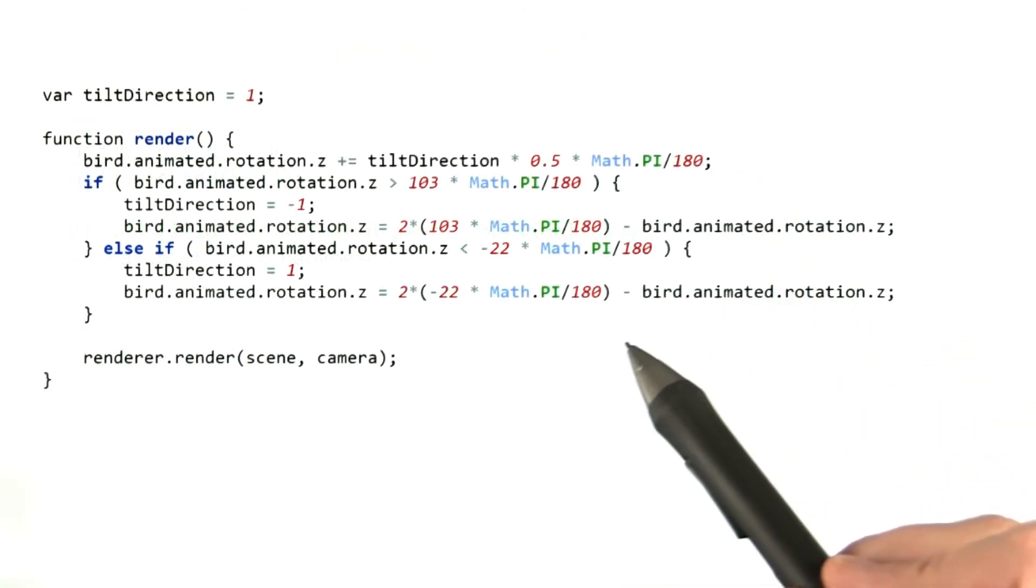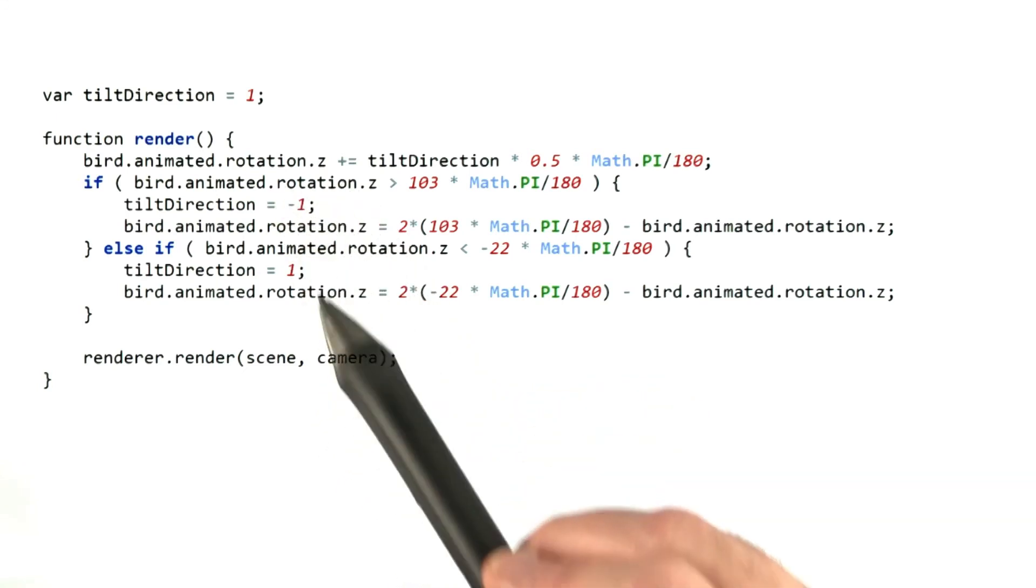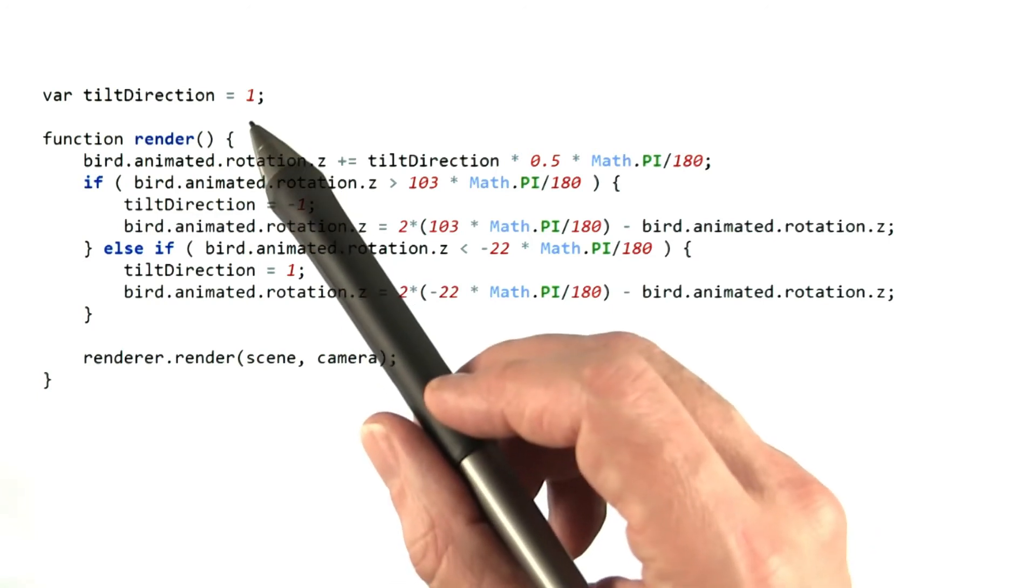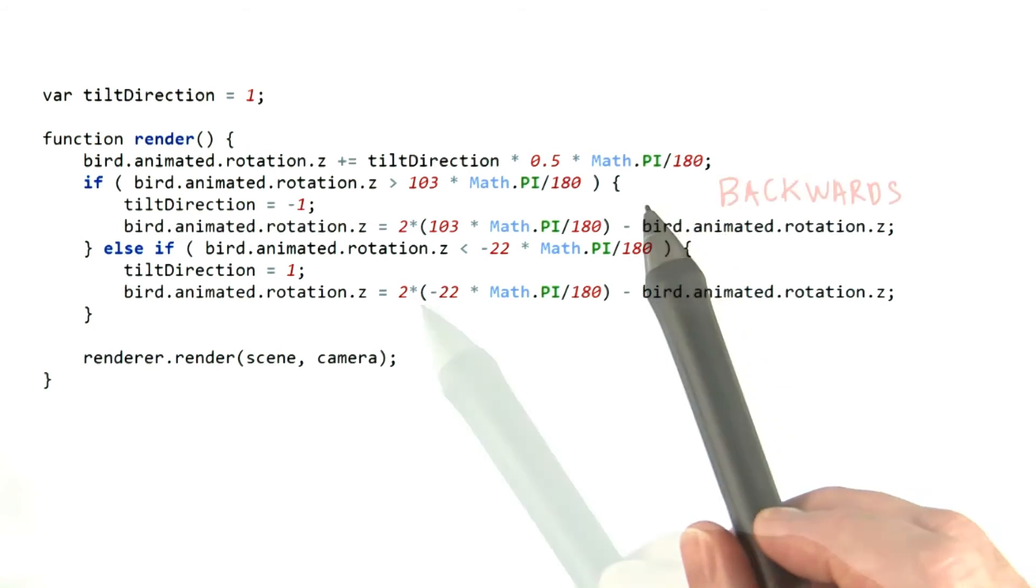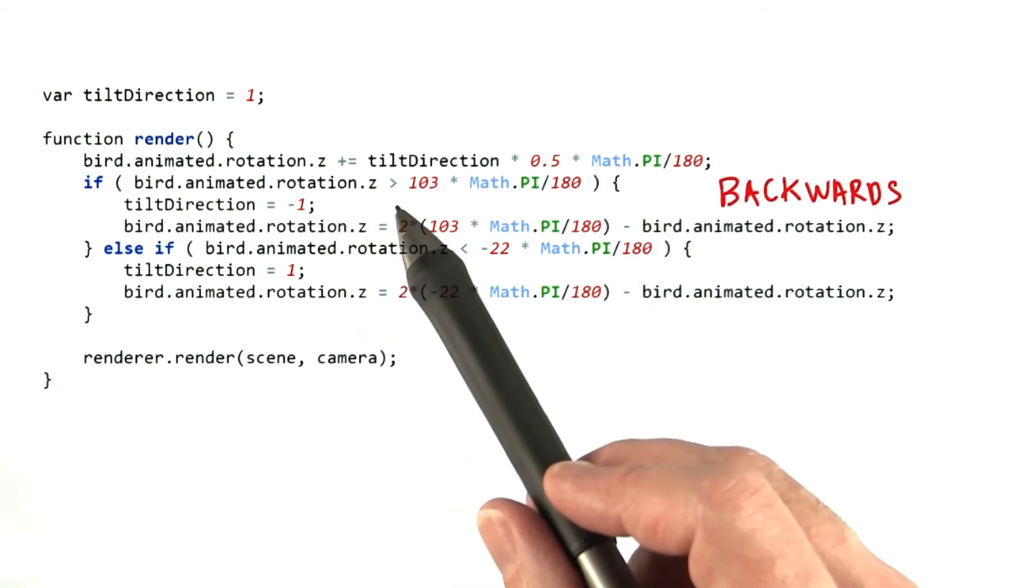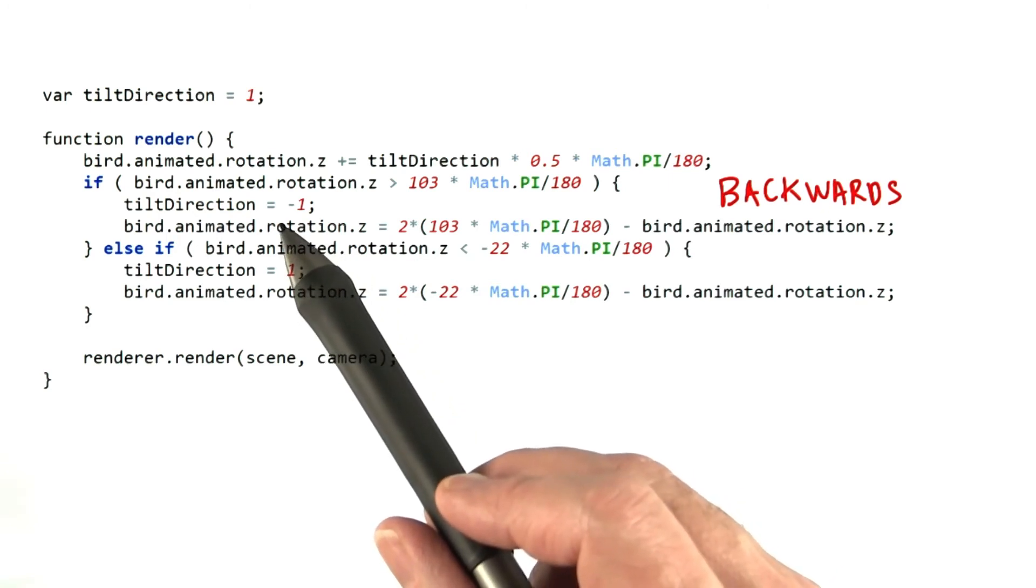Here's where the animation happens. We want to rotate the body around its Z axis, the axis of the crossbar. There's a variable called tilt direction that's either 1 or negative 1. If it's 1, then the rotation will increase by a small increment, half a degree per render. When the angle reaches a maximum of 103 degrees, the object swings back the other direction by changing tilt direction to negative 1.